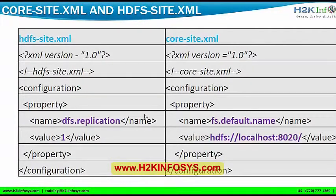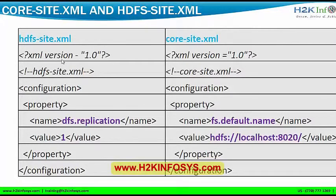This is how the XML configuration files look. Everything is in XML format. The first line is the version number you are using, and next is the site name. Every property is included inside two tags: 'configuration' and 'property'. For example, in a sample hdfs-site.xml, to declare the replication factor — by default it is three, but if I want to change it to one — this is how I write it in hdfs-site.xml.